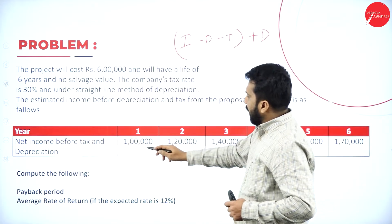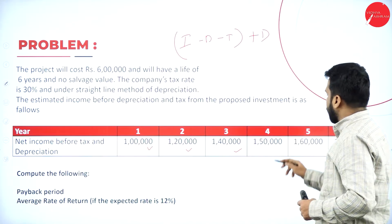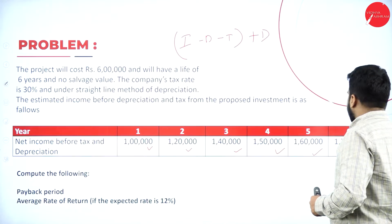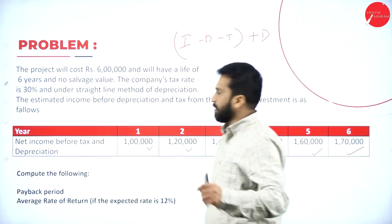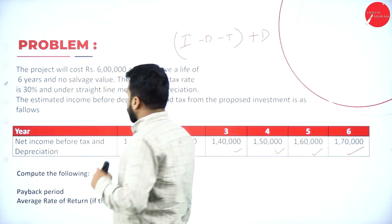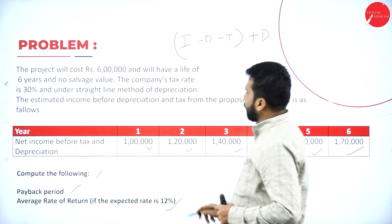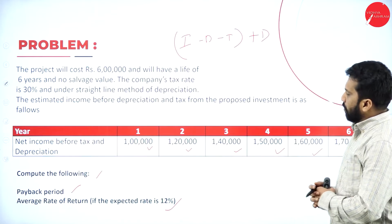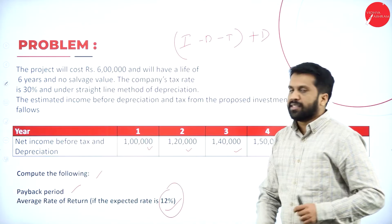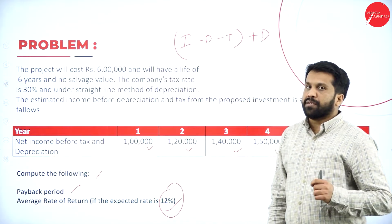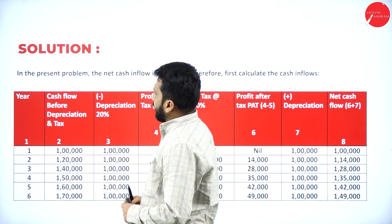So the income figures we have are: 1 lakh, 1 lakh 20,000, 1 lakh 40,000, 1 lakh 50,000, 1 lakh 60,000, and 1 lakh 70,000. We need to compute the payback period and average rate of return. The expected rate of return given is 12%. Now we move to the second slide.